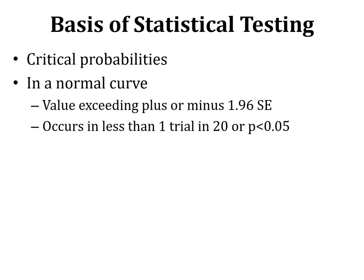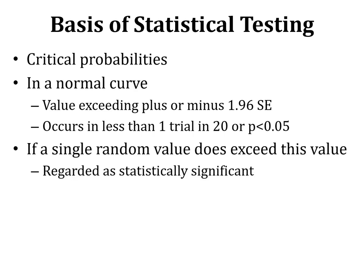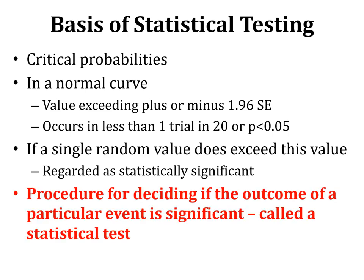In a normal curve, a value exceeding plus or minus 1.96 standard errors occurs in less than one trial in 20, or a probability of less than 0.05. If a single random value does exceed this value, this is regarded as statistically significant. So the procedure for deciding if the outcome of a particular event is significant is called a statistical test, and it uses the concepts of critical probability and the properties of the normal curve.